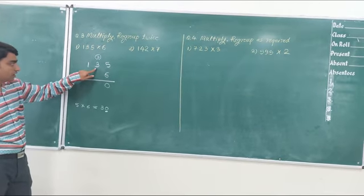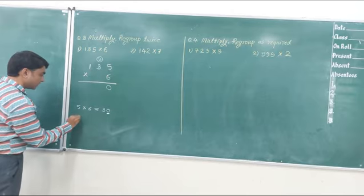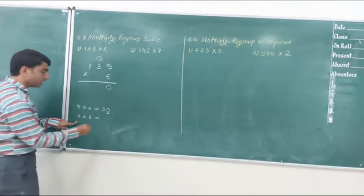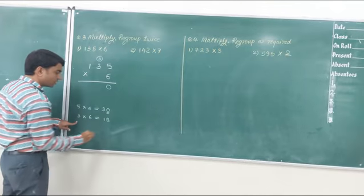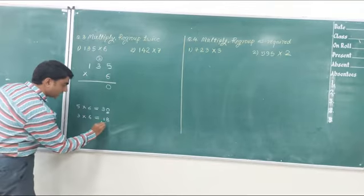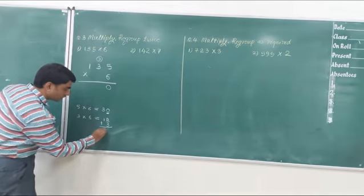Now, the next digit is 3. Let's multiply 3 by 6. 6 threes is 18. Now we get 18. We need to add this carry 3. So I will add 3 and we get 21.